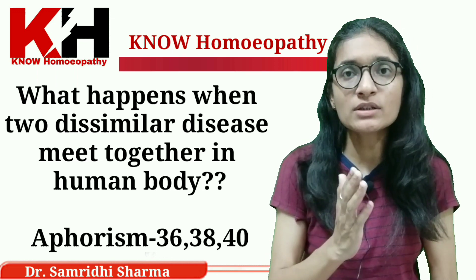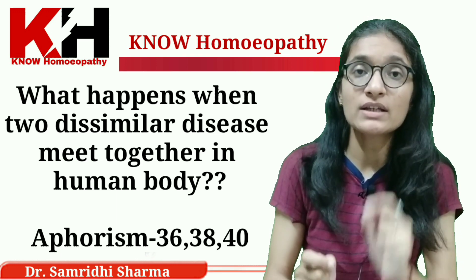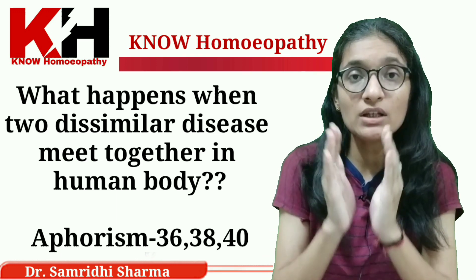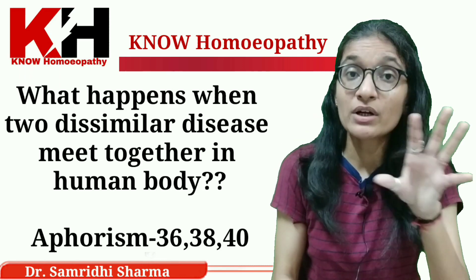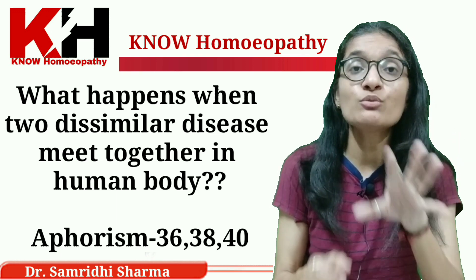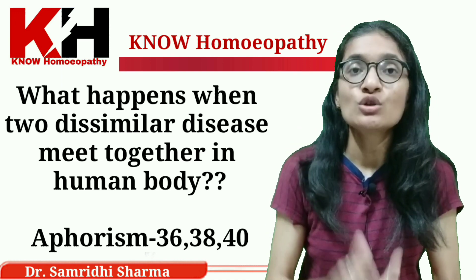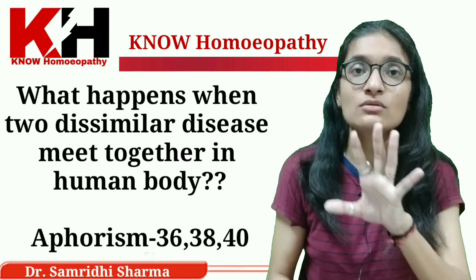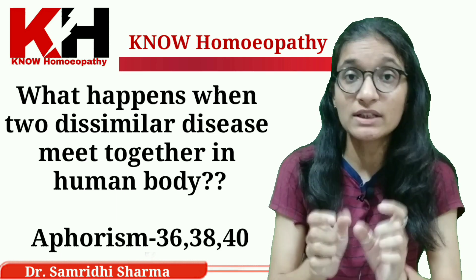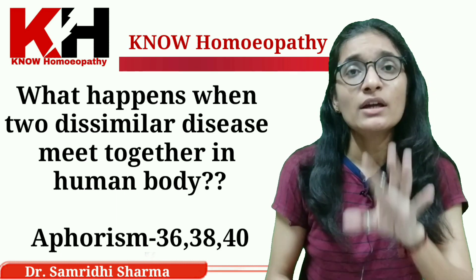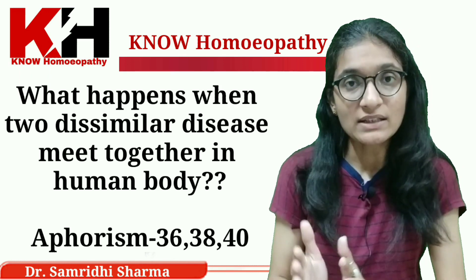The third possibility is that if the new disease and the old disease are of equal strength and of a chronic character, both of them occupy a particular part of the body, both of them run their course, and they are going to form a complex disease.